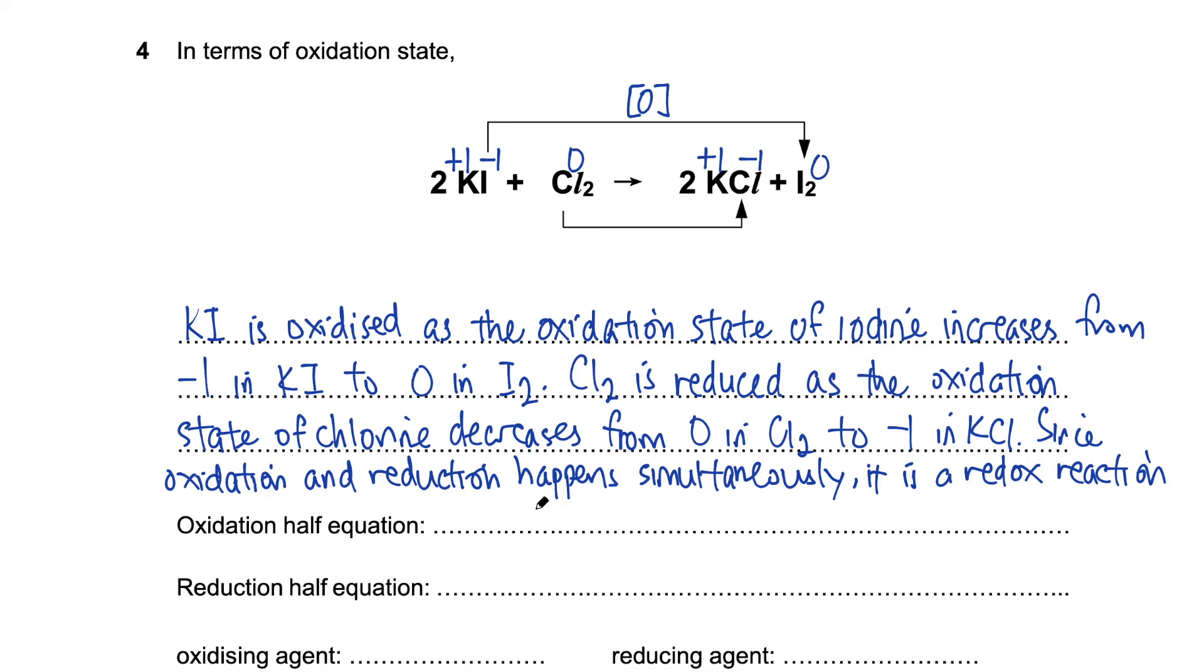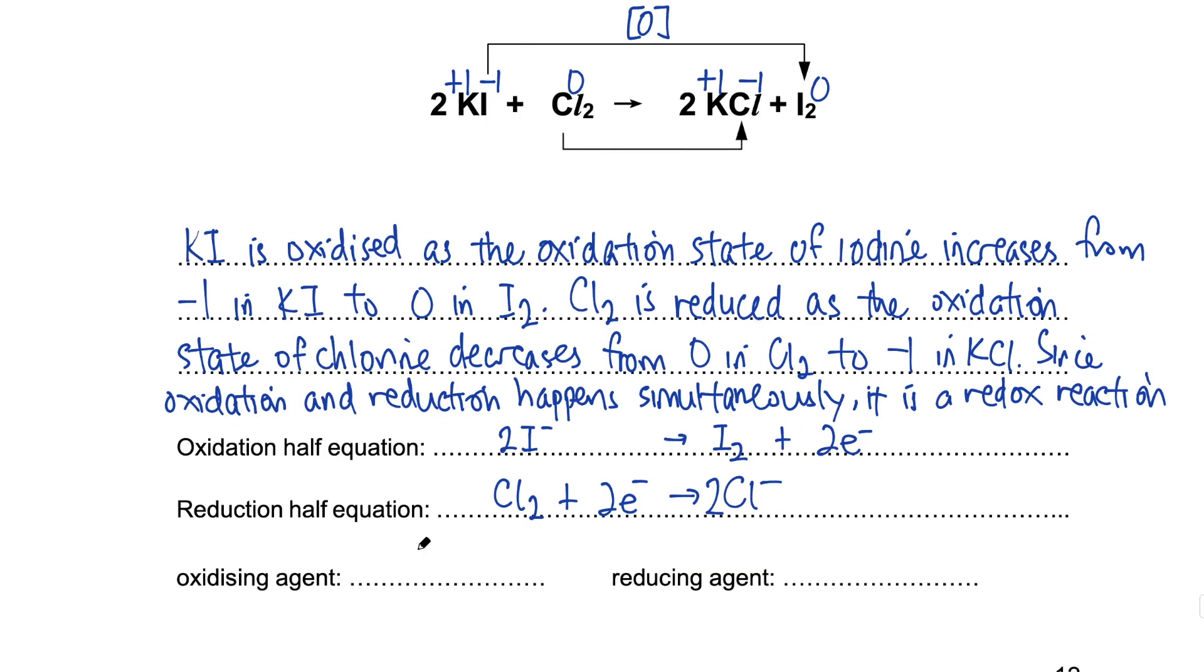We will leave out the spectator ions for the half equations here. The oxidation half equation will be from iodide ions becoming iodine. Balance the equation. And we see that oxidation is the loss of electrons. Chlorine gains electrons to form chloride ions. And this is a reduction reaction. The oxidizing agent is Cl2, while the reducing agent is KI.